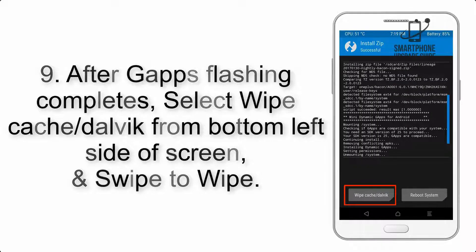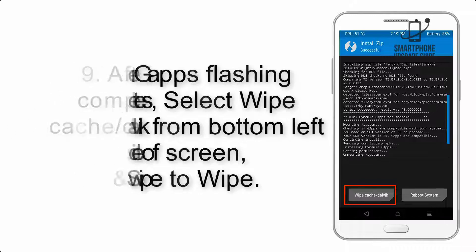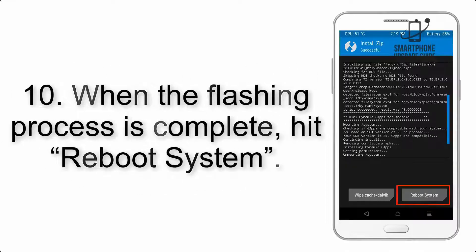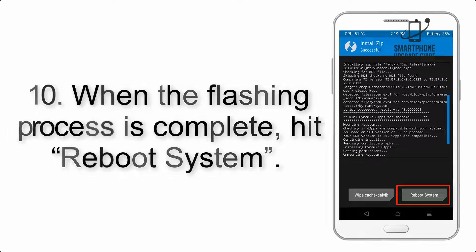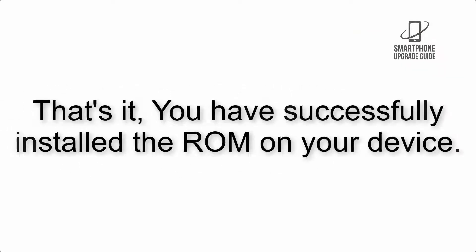Step 8: Flash the GApps zip package in the same manner. Step 9: After GApps flashing completes, select Wipe Cache and Dalvik from the bottom left side of the screen and swipe to wipe. Step 10: When the flashing process is complete, hit Reboot System. That's it — you have successfully installed the ROM on your device.